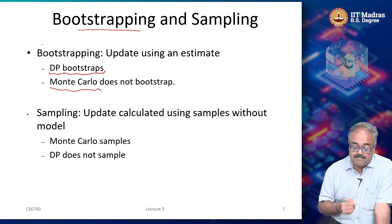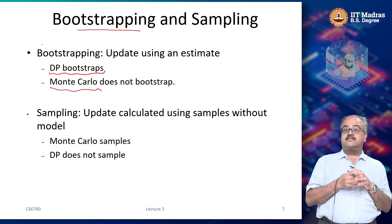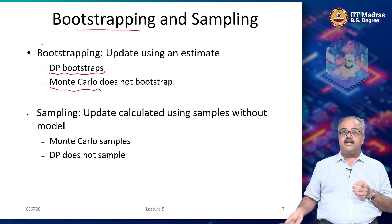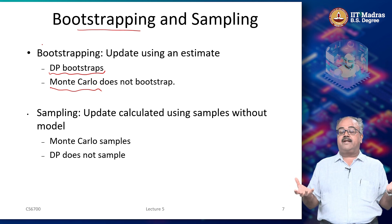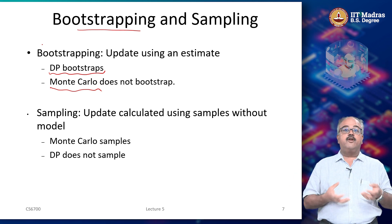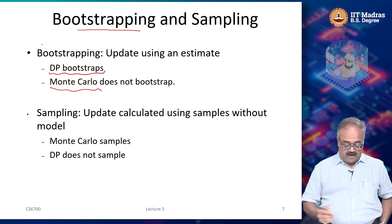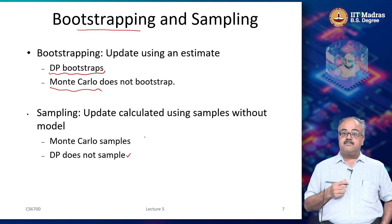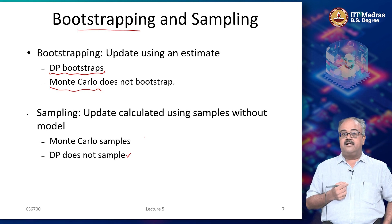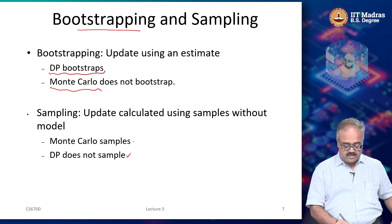Likewise, sampling is the second dimension. In dynamic programming, we do not sample — we assume the entire distribution is available to us in some analytical form, so we can explicitly compute expected values. Dynamic programming does not sample, while Monte Carlo methods do sample because we do not have the distribution, so we estimate the expectation by drawing samples from it.